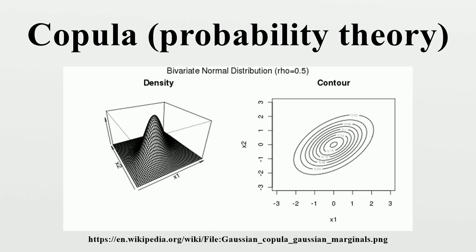Definition: In probabilistic terms, C is a d-dimensional copula if C is a joint cumulative distribution function of a d-dimensional random vector on the unit cube with uniform marginals. In analytic terms, C is a d-dimensional copula if: the copula is zero if one of the arguments is zero; the copula is equal to u if one argument is u and all others are one; and C is d-increasing, i.e., for each hyper-rectangle the C-volume is non-negative.